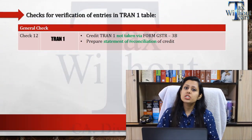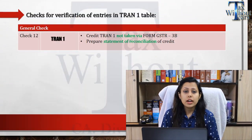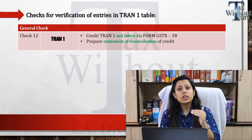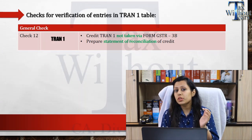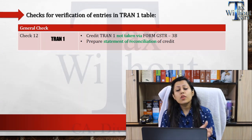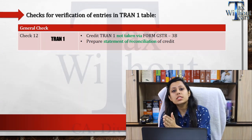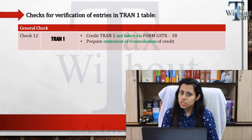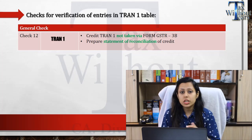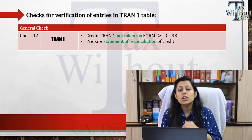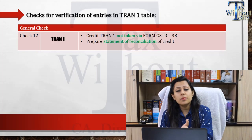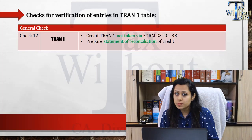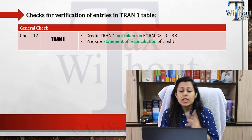The general check will be that whatever credit you have taken as per Tran 1, you have not claimed the same via your GST returns — be it your GSTR-3B for July month or any other subsequent month.